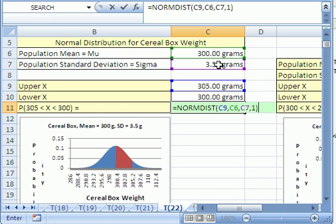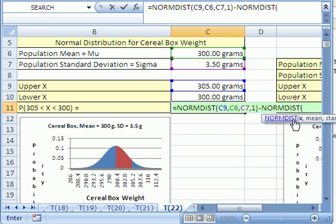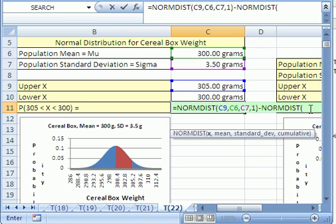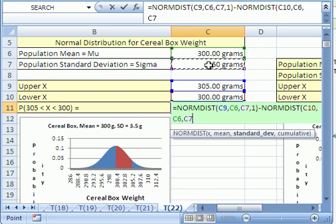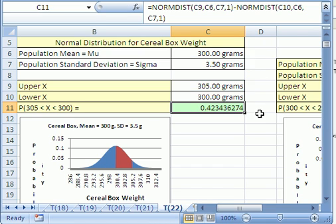But that's not it. Now we have to subtract the smaller area. So we do minus NORMDIST. We put in our X, and that's the smaller X. Always do the bigger X first, then the smaller X. And then comma, mean, comma, standard deviation, comma, one, close parentheses. That formula will take the bigger area and subtract the smaller area and give us the difference, which is between here and here. So the probability of pulling a box of cereal between 305 and 300 grams is 0.42...